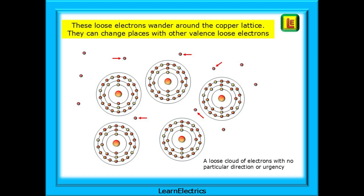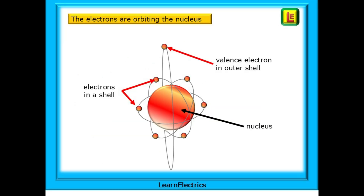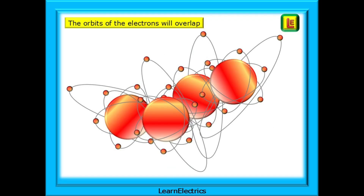They form an electron cloud, some going left, some going right, some this way and some that way, just like a crowded shopping mall at the weekend, full of people all going different ways with no urgency. The make-up of the nucleus plus the number of electrons is what makes this a copper atom. Silver is also a good conductor of electricity, but will have a different structure to the nucleus and a different number of electrons orbiting around it. Silicon is a semiconductor and will be different again — more on this in another video. The orbits of the electrons are overlapping with each other. The atoms are tightly packed, so it is easy for these loose valence electrons to move between atoms.